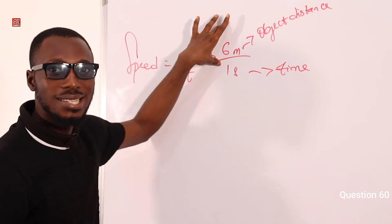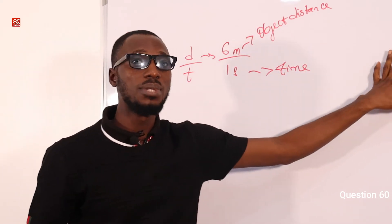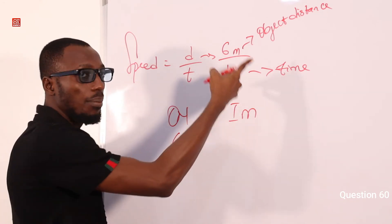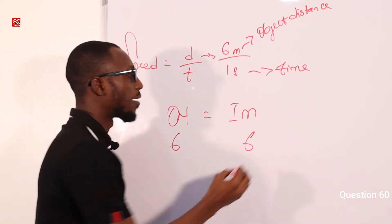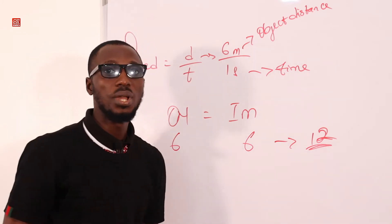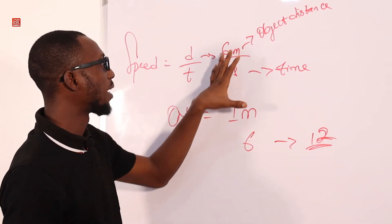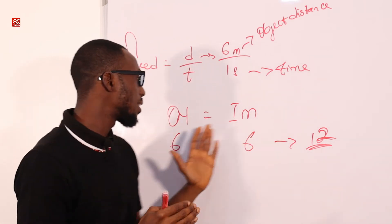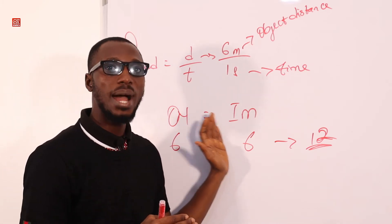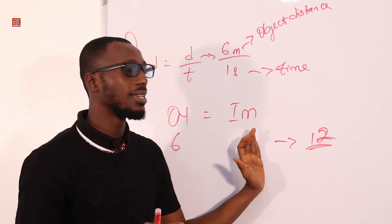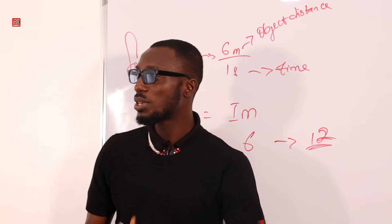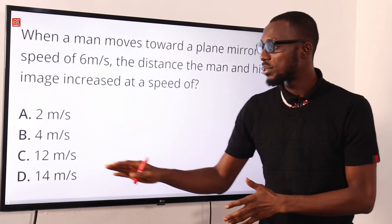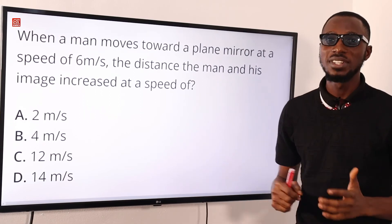For a plane mirror, the object distance equals the image distance. So if the object distance is 6, the image distance is also 6. Adding them together gives 12. The question asks for the distance between the man and his image — that is 6 from the man to the mirror, plus 6 from the mirror to the image behind it, giving 12 meters per second. The correct option is option C, 12 meters per second.